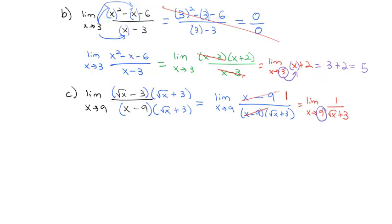Now that we've removed the thing that makes the denominator 0, we can plug 9 in: 1/(√9+3) = 1/(3+3) = 1/6.